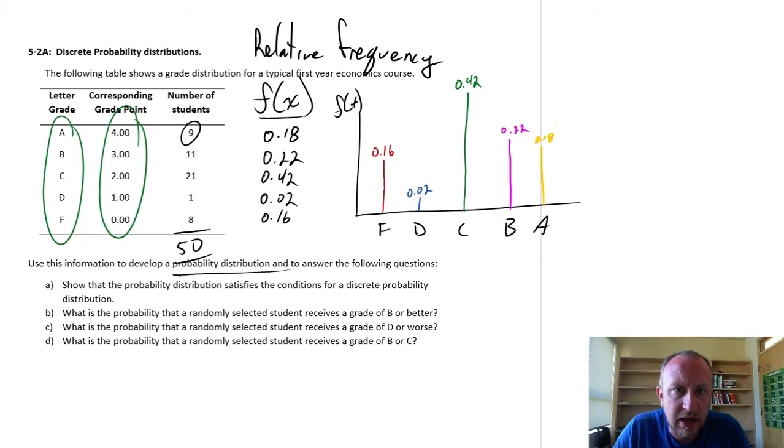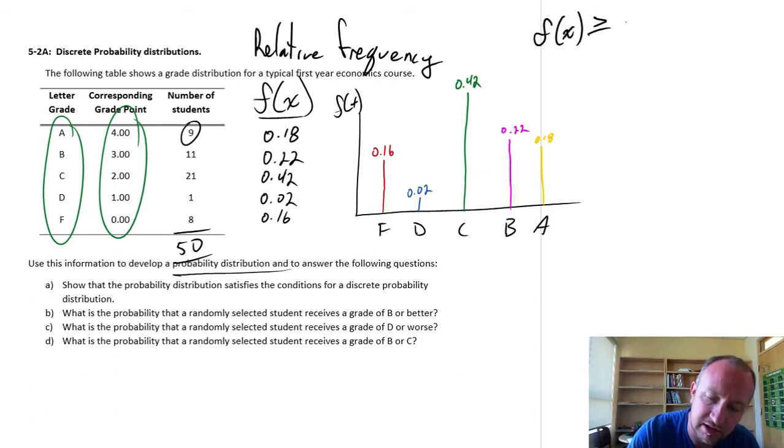Now, we can also determine, well for part A, show that the probability distribution satisfies the conditions for a discrete probability distribution. So, those conditions are simply that any given probability is greater than or equal to 0. We can't have negative probabilities, is basically what this is saying. So, we look at our probabilities. None of those are less than 0. So, this checks out. Everything's fine.